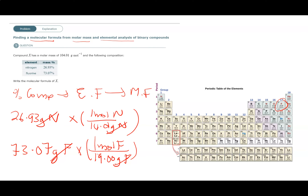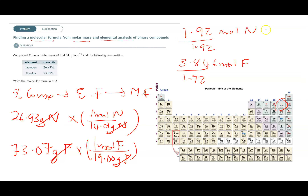We get 1.92 moles of nitrogen. For fluorine, 73.07 ÷ 19.00 gives 3.846 moles of fluorine. Since 1.92 is the smallest, we divide both by 1.92, giving 1 nitrogen for every 2 fluorines. So our empirical formula is NF₂.